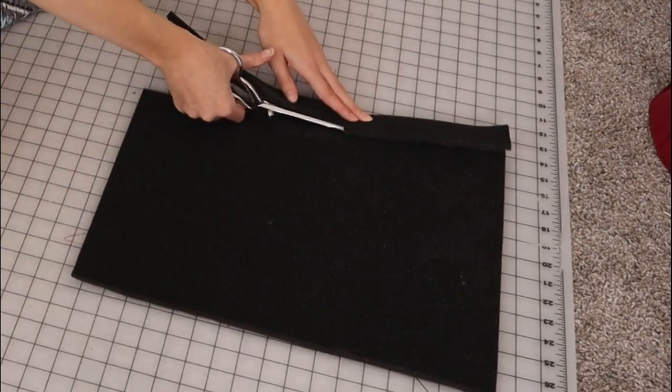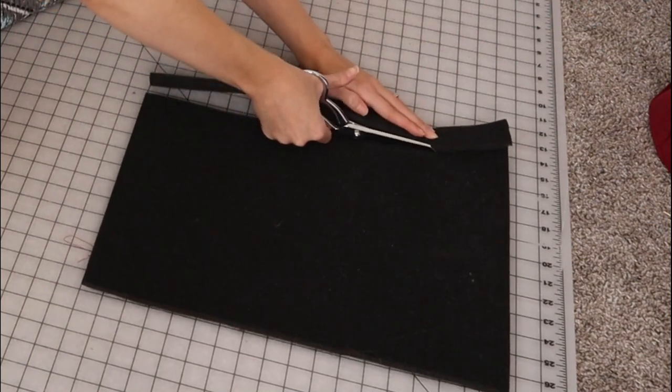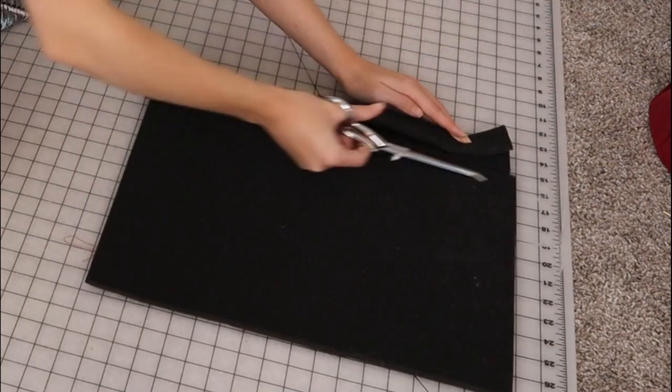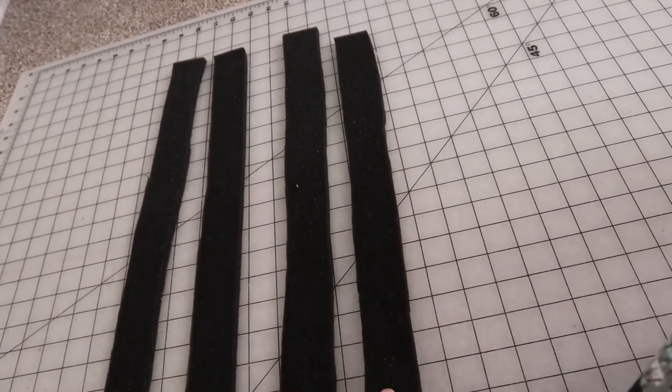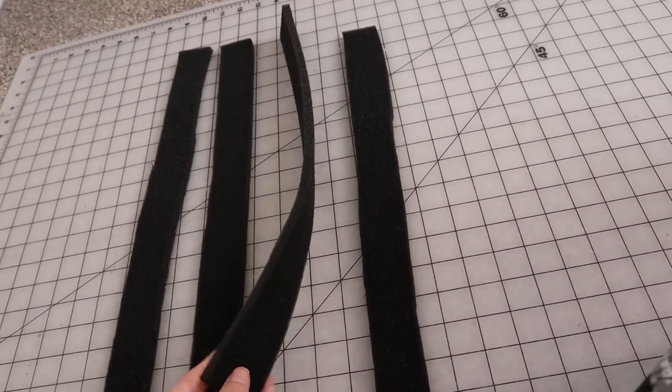Now packaging foam, at least in a package full of car parts, doesn't come in a very big size, so I'm actually going to be cutting out multiple strips and sewing them together to make the belt.